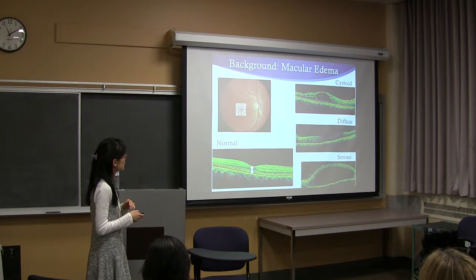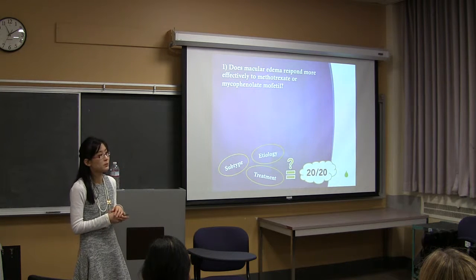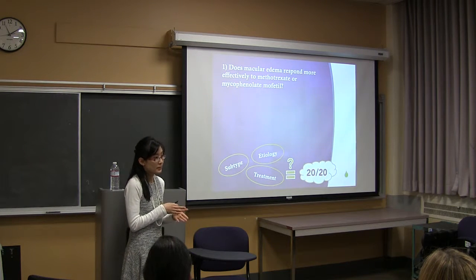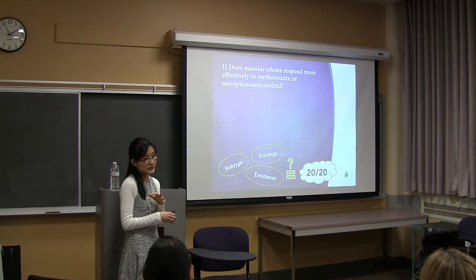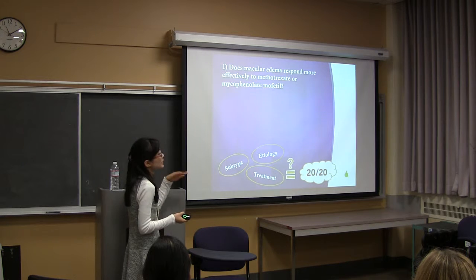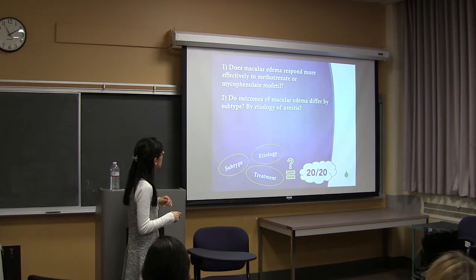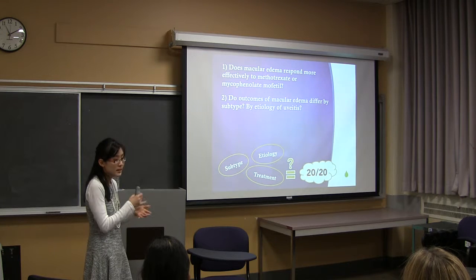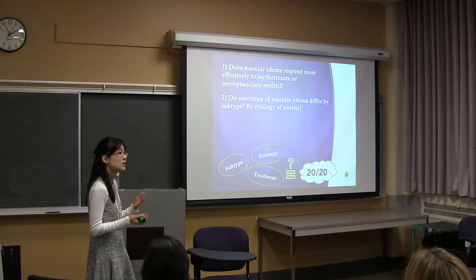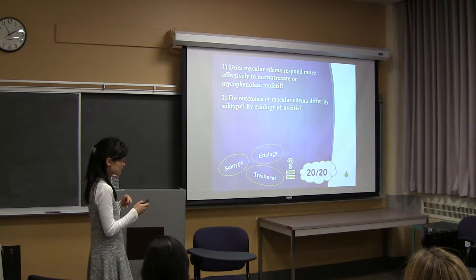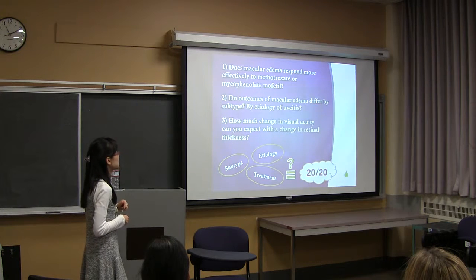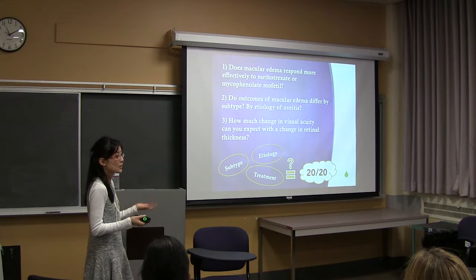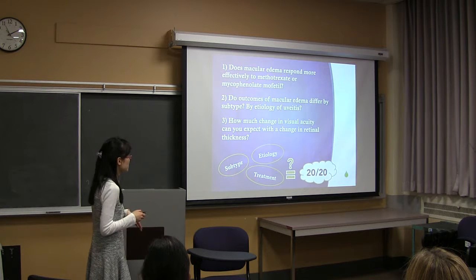That leads into my research questions. My data comes from a randomized control trial performed in India, which looked at control of ocular inflammation as a primary outcome with either methotrexate or mycophenolate. My first research question looks at macular edema outcomes in response to either drug. My secondary question is whether outcomes differ by subtype or by etiology of uveitis. And finally, how much change can you expect in visual acuity with a change in retinal thickness — which is what's probably most important to patients.